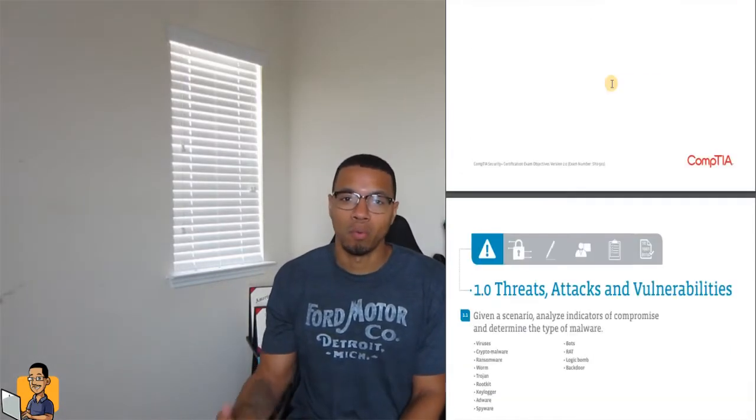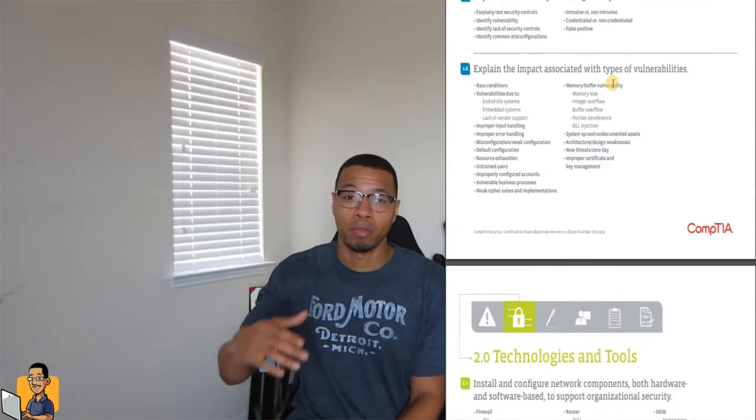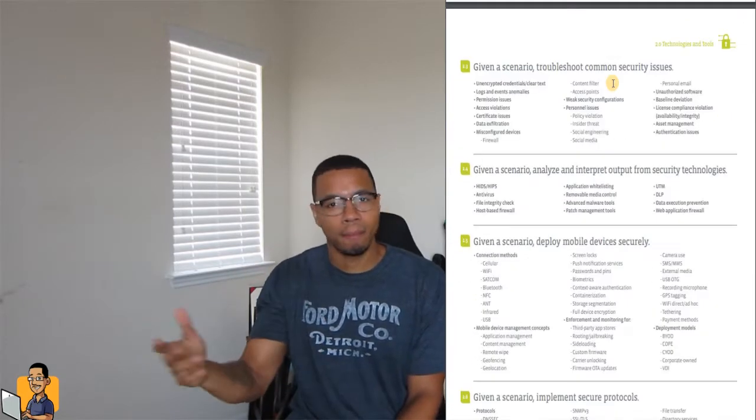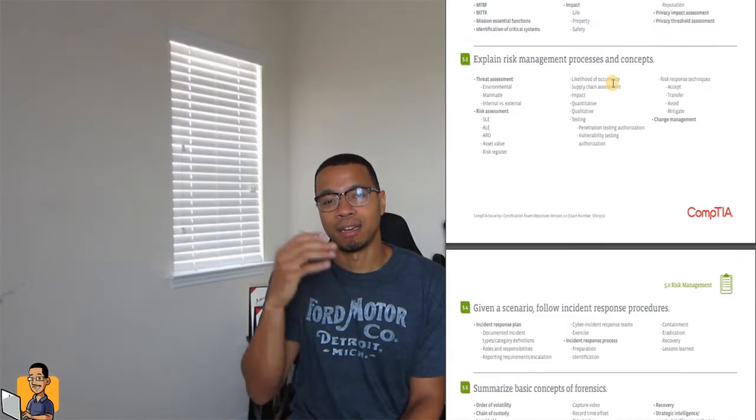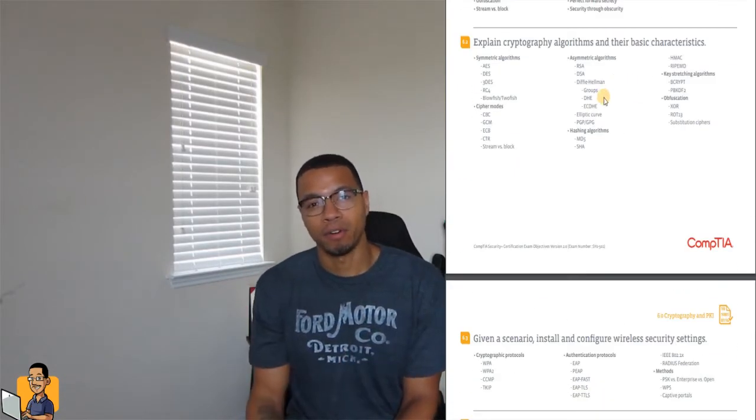Step 1. First thing you need to do is go over all objectives on the exam. Every CompTIA test has a list of objectives — pretty much all the stuff that's going to be covered on the exam. You can actually go on to CompTIA's website and look at the things that are going to be covered on the actual test.